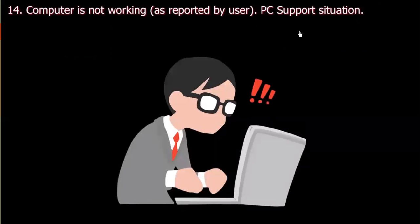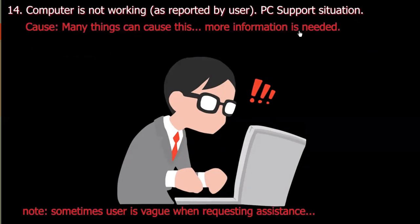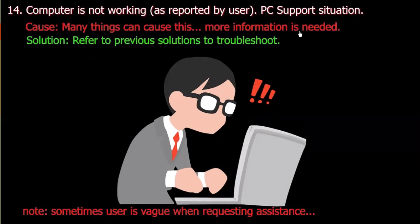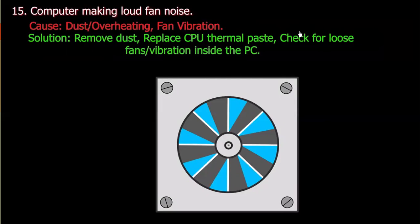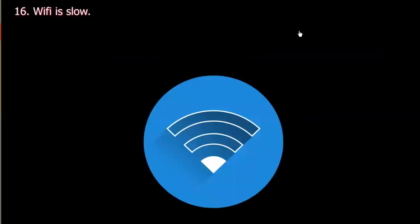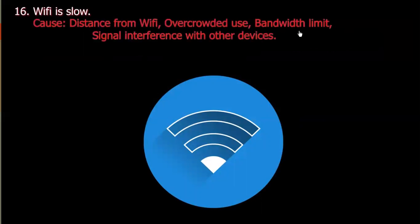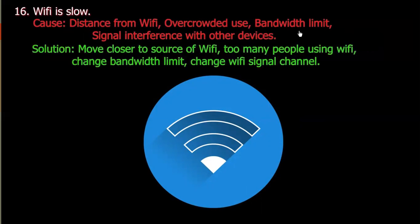Number fourteen: Computer is not working as reported by the user. Cause: Many things can cause this — more information may be needed. Solution: Refer to previous solutions to troubleshoot. Number fifteen: Computer making loud fan noise. Cause: Dust, overheating, or fan vibration. Solution: Remove dust, replace CPU thermal paste, check for loose fans and vibration inside the PC. Number sixteen: Wi-Fi is slow. Cause: Distance from Wi-Fi, overcrowded network, bandwidth limit, or signal interference with other devices. Solution: Move closer to the Wi-Fi source, reduce users on Wi-Fi, change bandwidth limit, or change the Wi-Fi signal channel.